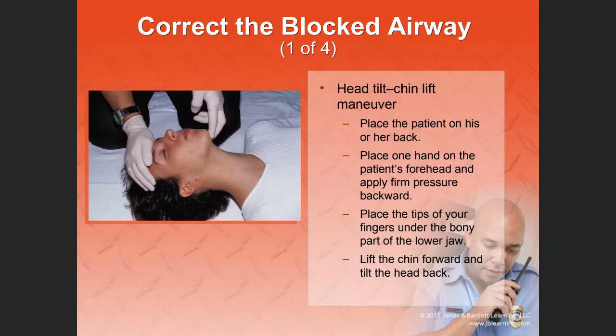For the head tilt–chin lift maneuver: place the patient on their back, place one hand on the patient's forehead, apply firm pressure backward, place the tips of your fingers under the bony part of the lower jaw, and lift the chin forward while tilting the head back. This is done when there is no spinal injury suspected.